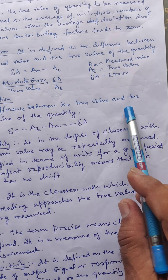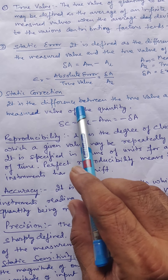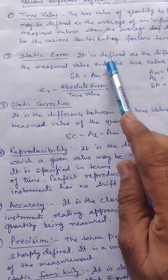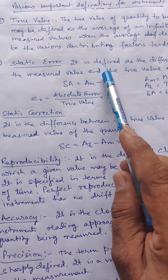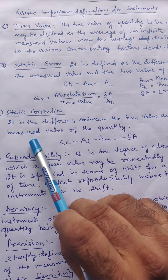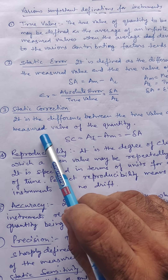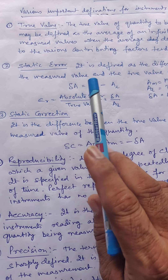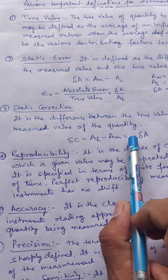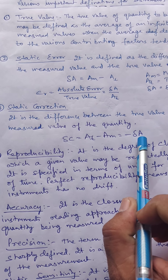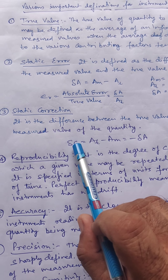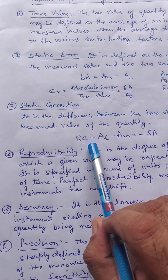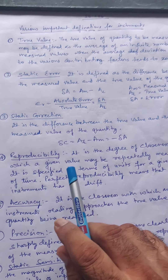The true value minus the measured value gives the static error. The negative of static error is the static correction. So if you have to correct any instrument, you apply the static correction.